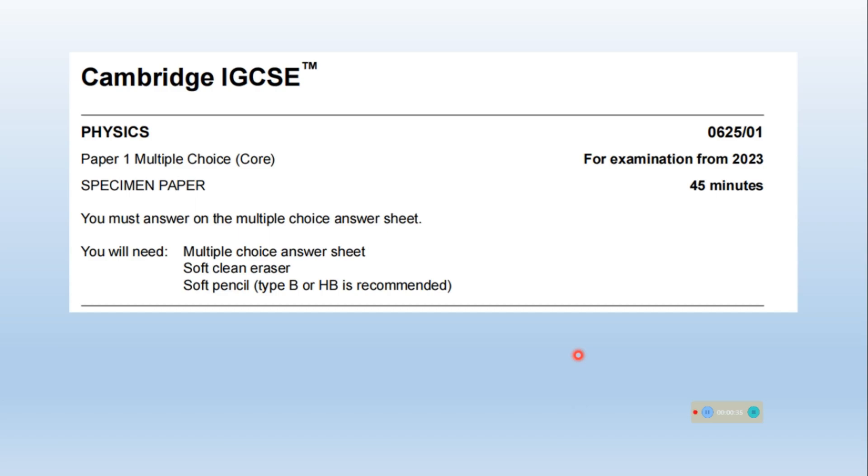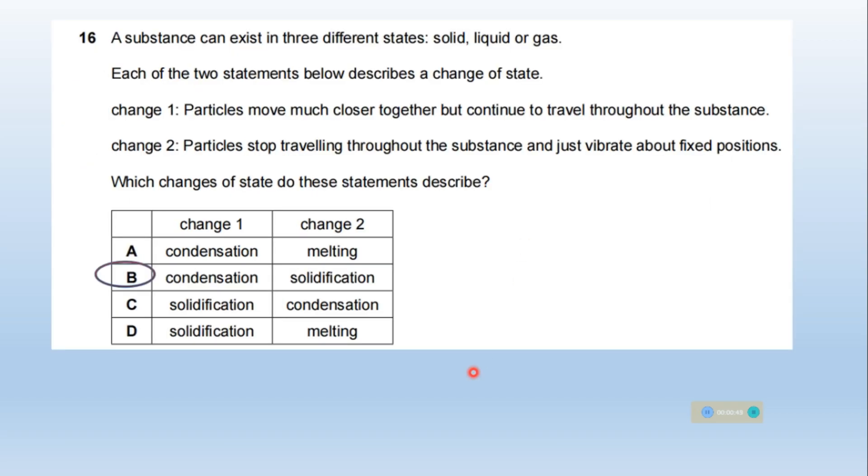Hello students! In this video we will answer paper 1, multiple choice. Paper code is 06501. It's a Cambridge IGCSE board. As question 1 to question 15, the video is already uploaded. And in this video we will solve questions from question number 16.